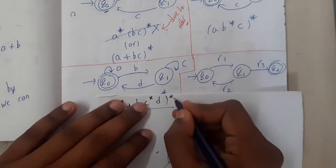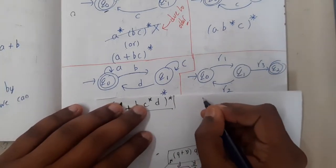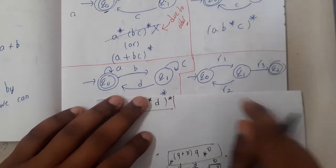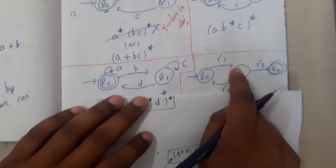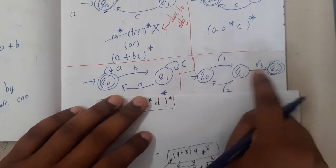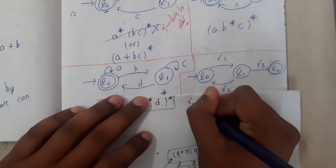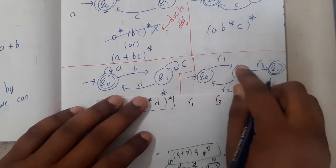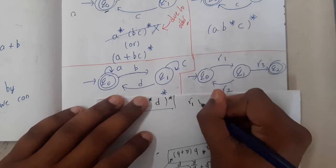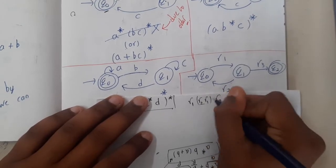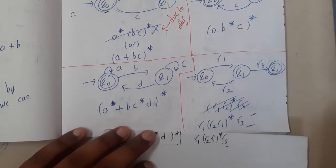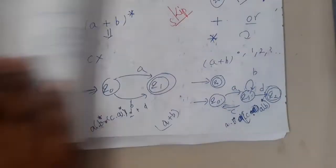Moving on to the next question, which seems a bit interesting. If I get r1, I go one way; if I get r3, I go directly another way. So r1+r3 is one combination. In between, I can roam r2 and r1 as many times as I want — so (r2·r1)*. The final answer is r1(r2·r1)*r3, which is exactly matching with my book.